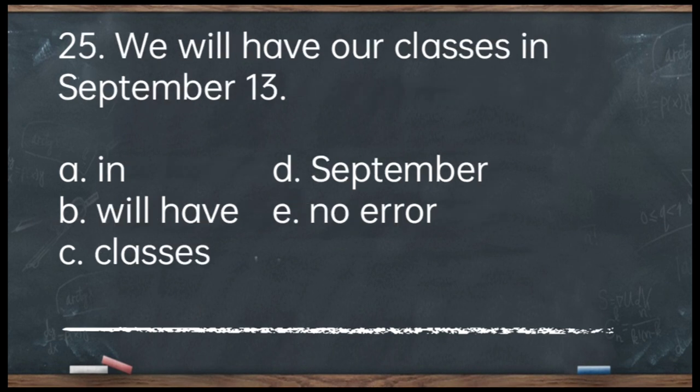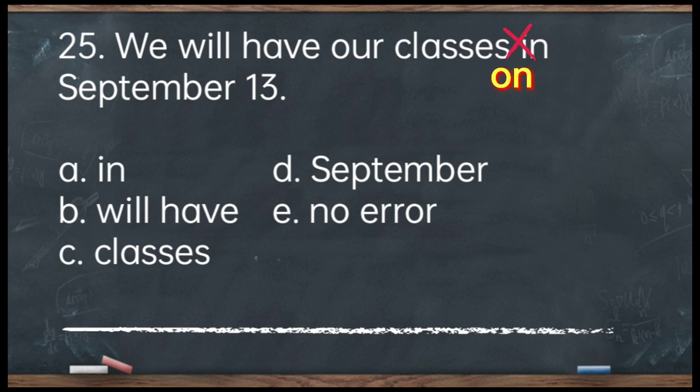Number 25. We will have our classes in September 13. A. In. B. Will have. C. Classes. D. September. E. No error. The answer is letter A — 'in.' Since there is a day (the 13th), you use 'on.' We say: we will have our classes on September 13. However, if we remove the day and say just September, we say 'in September.'